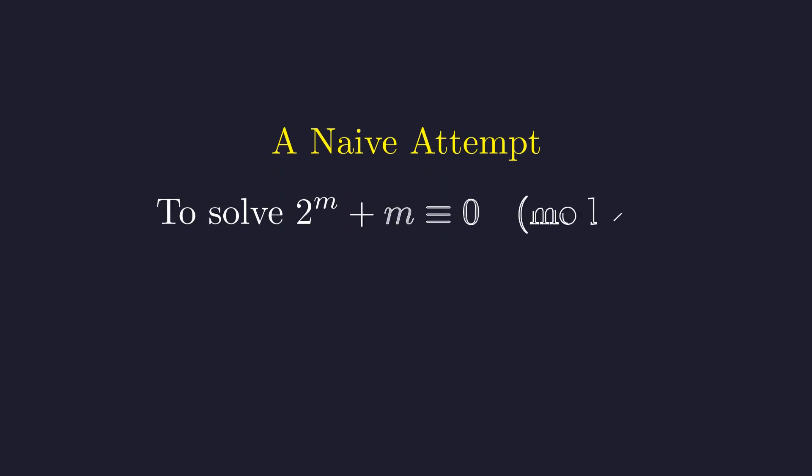Before diving into the full solution, let's see why a simpler approach fails. This will motivate the more sophisticated machinery required. One idea is to satisfy the first congruence by choosing m to be a positive multiple of 2 to the k.